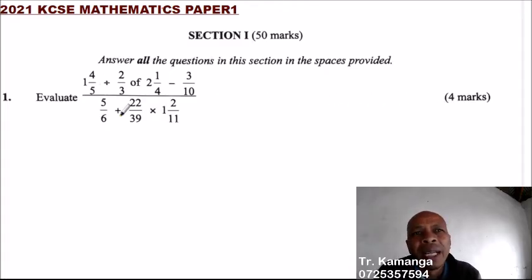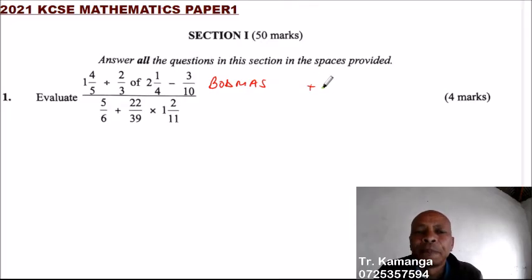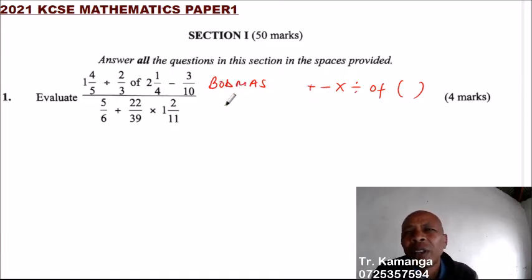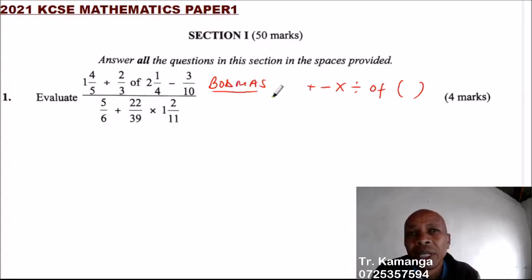When we are working with this kind of question, we have to follow a certain order — what we call BODMAS. BODMAS means we have four major operations: addition, subtraction, multiplication, and division. Other operations include 'of' and brackets. You follow the order: Brackets, Of, Division, Multiplication, Addition, and finally Subtraction.